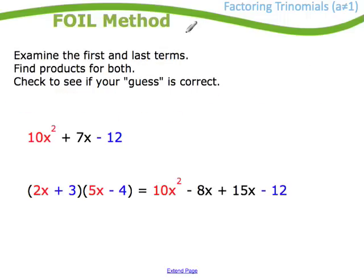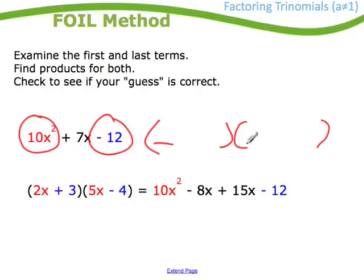The FOIL method or guess and check one just says to take a look at the first term and the last term because I know when I am factoring this, in order to get this 10x squared, it's going to be whatever's in front here and whatever's in front there is going to give it to me. So I need to find things that multiply to 10x squared. I could have 2x and 5x or I could have had 10x and x.